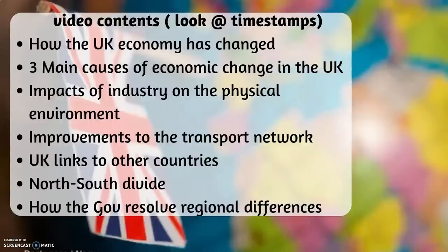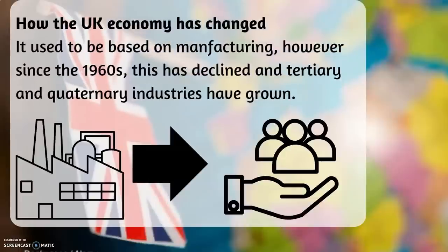How the UK economy has changed. It used to be based on manufacturing. However, since the 1960s, this has declined and tertiary industries and quaternary industries have grown.